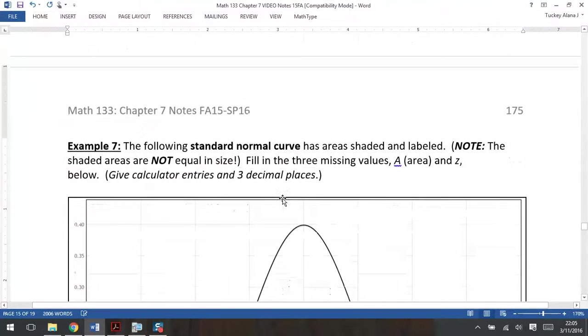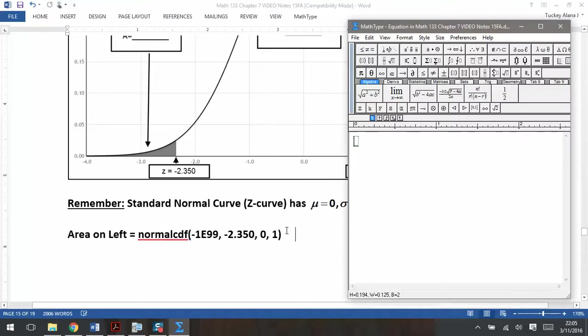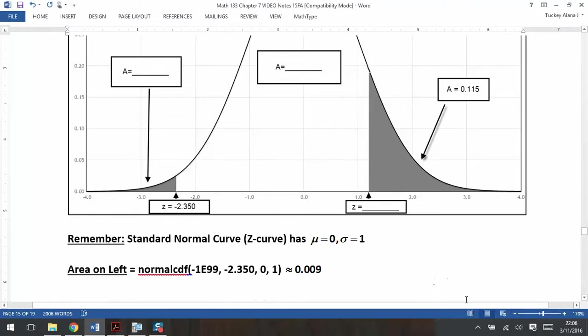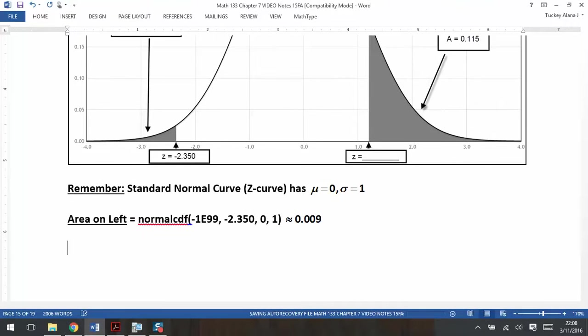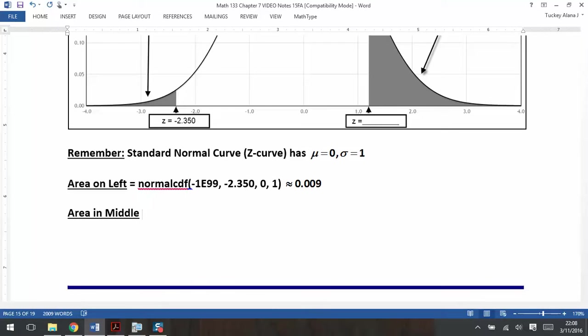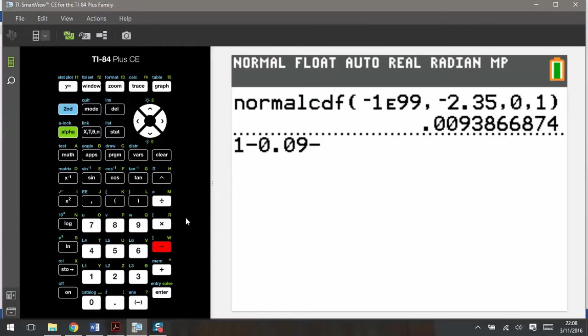Now the problem says to round to three decimal places, so I'm actually going to round that answer to 0.009. So I'm losing a little bit of accuracy, but that's what was asked for in the problem. So now we know that the area on the left is 0.009. Now I need the middle area, the area in the middle. But remember that the entire curve adds up to 1. So if the whole curve makes 1, and I know that this little gray portion over here is 0.009, and I know this one over here is 0.115, I could add the two of them together and take them away from 1. Or if you will, I could just say it's 1 minus 0.009, but also minus 0.115.